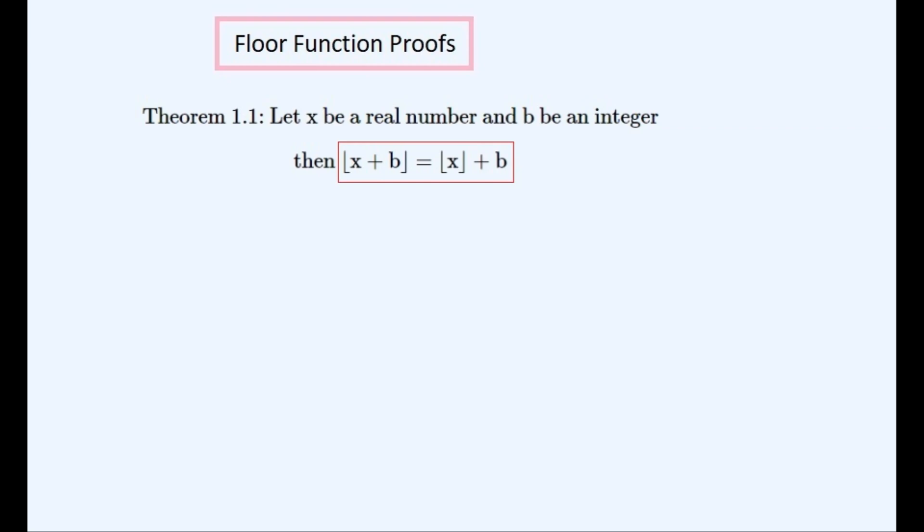It seems obvious enough but it can be proven using some manipulation so that it might be more rigorously seen to be true. So the first thing to do is to split the real number up into its integer and non-integer components and call them a and epsilon.